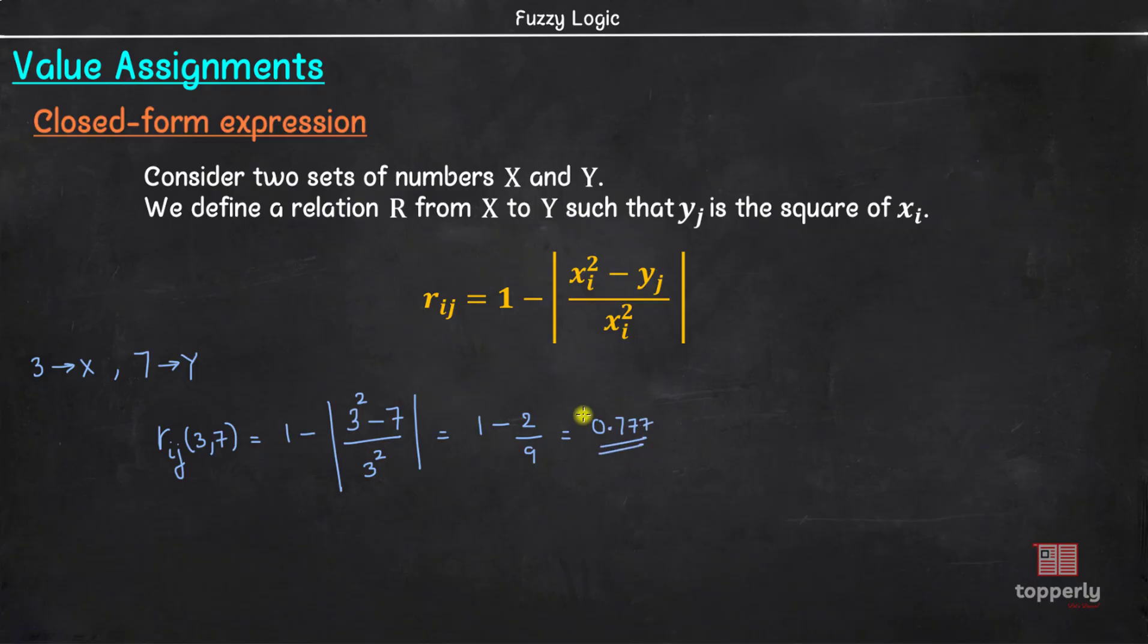So, the membership value for the relation between number 3 and 7 is 0.777. This means that number 7 is not the square of number 3 but is a close value to the actual square of 3. If we take 3 in set X and 9 in set Y, then Rij of (3,9) equals 1 minus 3 square minus 9 the whole by 3 square which equals 1. This means that number 9 is the square of number 3 and hence we obtain the highest membership value for the relation between them.